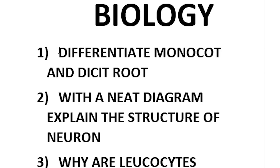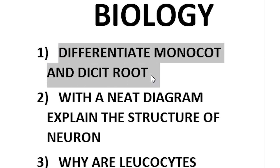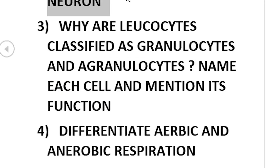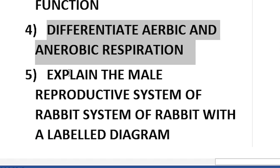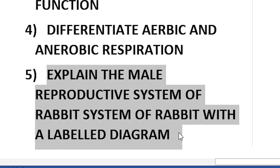The next section is biology. The first question is: differentiate dicot and monocot root with a neat labelled diagram. Explain the structure of a neuron. Why are leucocytes classified as granulocytes and agranulocytes? Name each cell and mention its function. Differentiate between aerobic and anaerobic respiration.